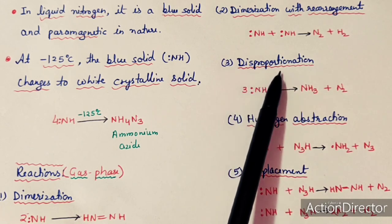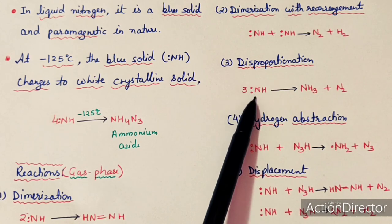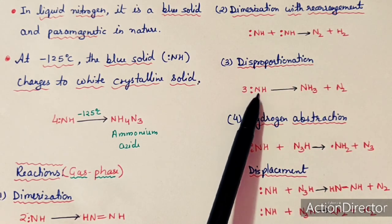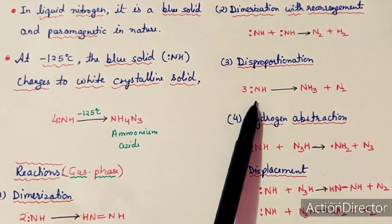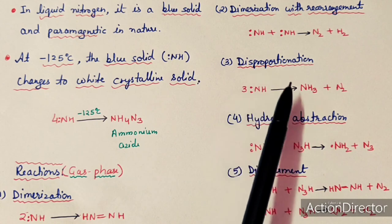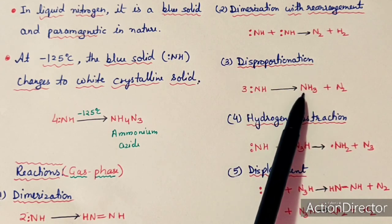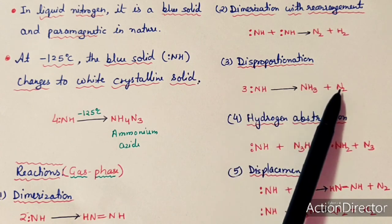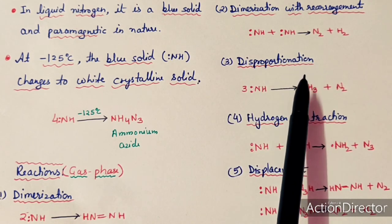The third reaction shown by imine free radical is the disproportionation reaction — a reaction where a molecule having an element with an intermediate oxidation state simultaneously undergoes oxidation and reduction. Here, nitrogen has a minus one oxidation state; it increases to zero (oxidation) and decreases to minus three (reduction) simultaneously. So oxidation and reduction are occurring at the same time, and this is called a disproportionation reaction.